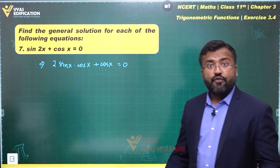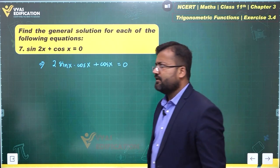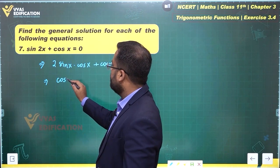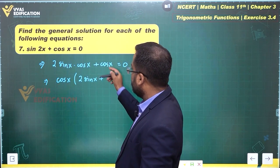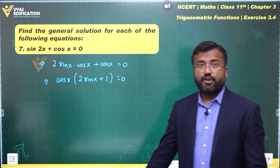In the second term, we can take cos x common. Yes, take it. What remains is 2 sin x plus what remains over here is simply 1. This is what you get.